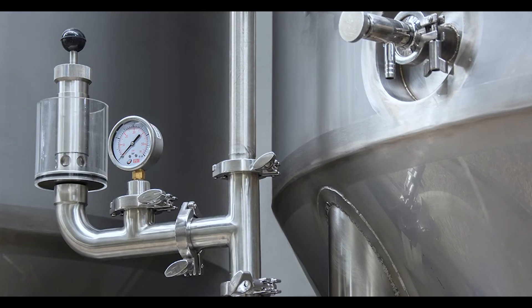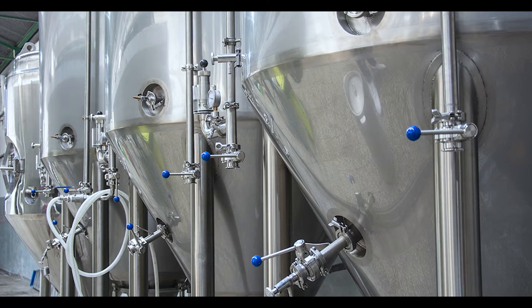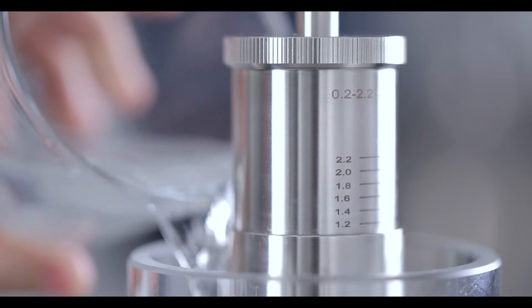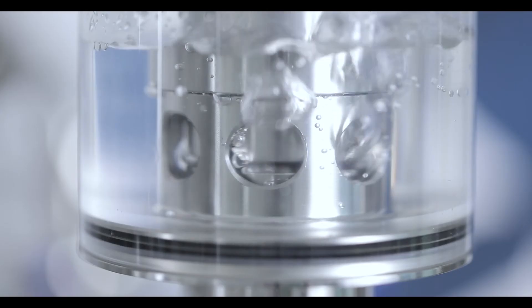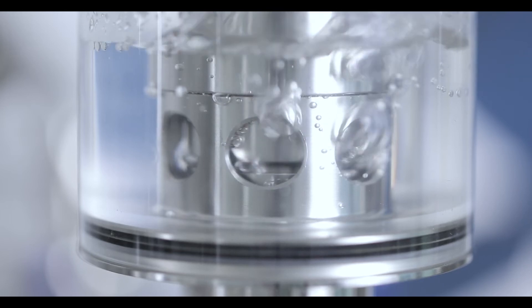The airlock must be connected in a vertical position and the supply pipe must come out of the upper part of the tank. Once installed, we must fill the glass with water. This will allow us to see the generation of CO2 during the fermentation process.